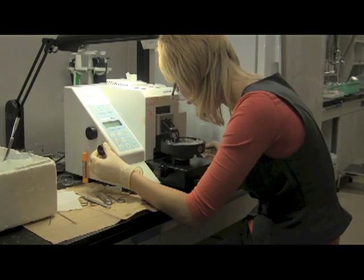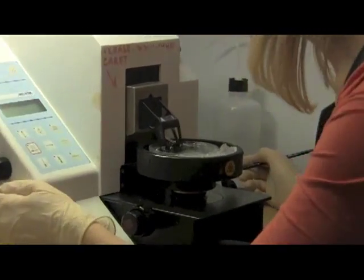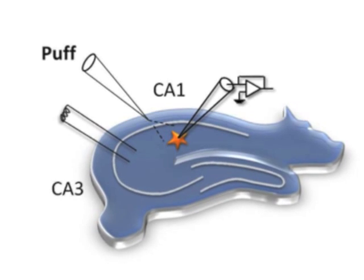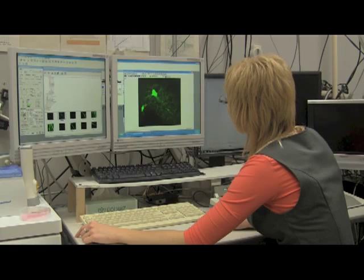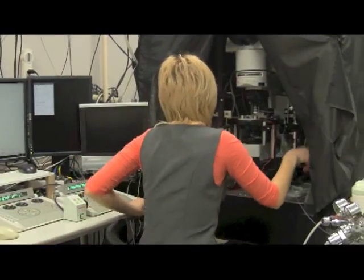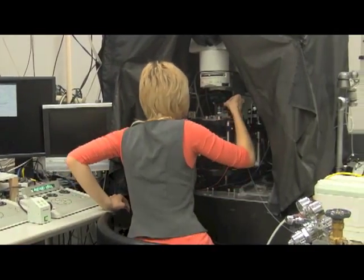I'm Pei Yuxi, and I'm the first author of this paper. We recorded potassium currents from single astrocytes in the hippocampus to monitor changes in extracellular potassium during synaptic transmission. We also performed two-photon calcium imaging from presynaptic terminals of CA3 pyramidal neurons to investigate the effect of potassium changes on presynaptic calcium dynamics and release probabilities of neurotransmitters.